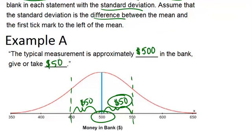So if I saw that, I would think, okay, so most people have between $450 and $550 because that's $500, give or take $50. All right, let's look at example B.